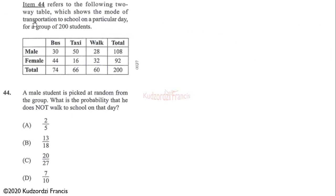Question 44 refers to a two-way table showing the mode of transportation to school for 200 students. A male student is picked at random — what is the probability that he does not walk to school? Not walking means he either took a bus or a taxi.